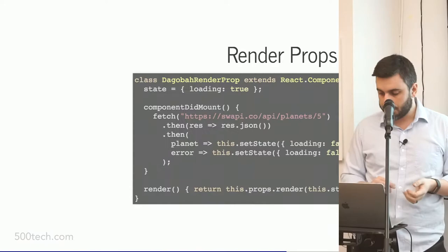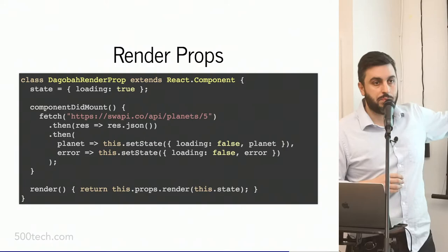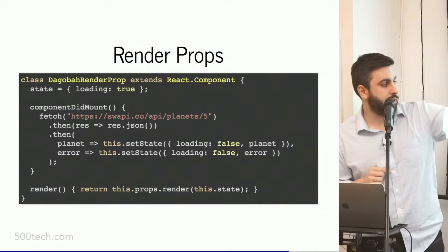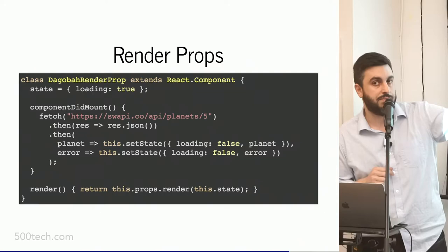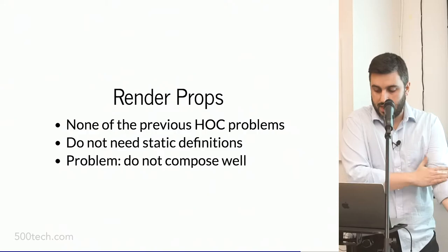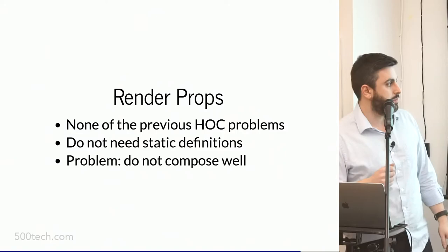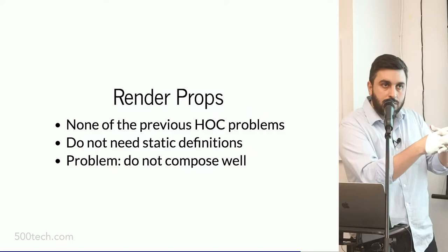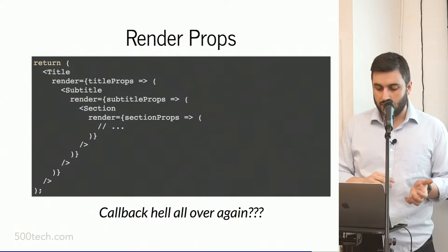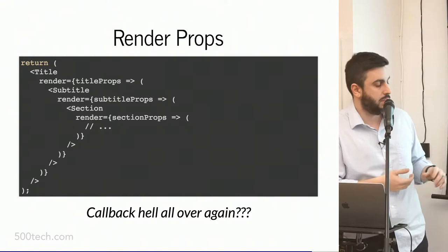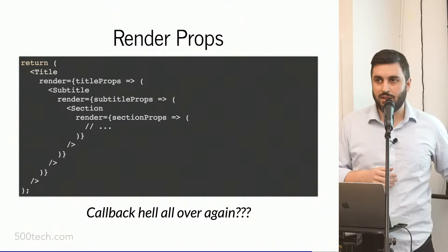This is how you implement it — a valid render prop without the nitty-gritty things of higher-order components. I'm grabbing the render prop and calling it as a function with my state. None of the previous HOC problems apply here — no static definitions needed, no calls outside the React lifecycle. The problem with render props is that they do not compose well. If we need information from three render props, it feels like we're in callback hell all over again — I think we solved that problem in the rest of JavaScript, but here we are again.